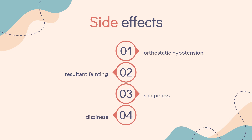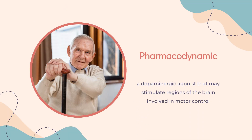More serious side effects include dyskinesias, especially when taking L-DOPA, fluid accumulation in the limbs, edema, suddenly falling asleep, confusion and hallucinations, increased heart rate and heart palpitations, and persistent erections (priapism).